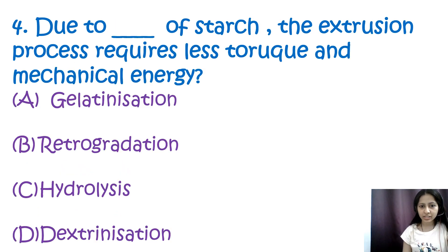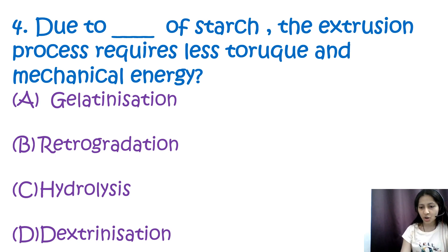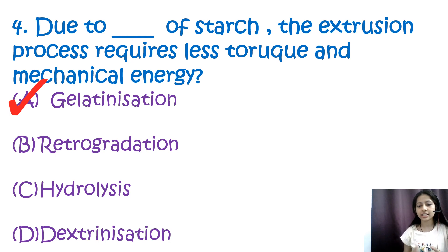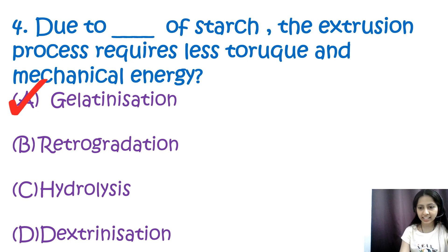Question 4: Due to blank of starch, the extrusion process requires less torque and mechanical energy — options are gelatinization, retrogradation, hydrolysis, and dextrinization. The correct answer is A, gelatinization. The extrusion process requires less torque and mechanical energy due to gelatinization of starch. Gelatinization is a process in which starch granules absorb water, swell up, and disturb the crystalline structure of the starch.